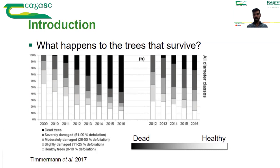Why do we have more dead trees on one site than the other? The impact of the disease depends a lot on the climate conditions of the site. Humid sites tend to have higher damage from ash dieback, which would put Ireland closer to the worse scenario due to its humid and Atlantic climate.